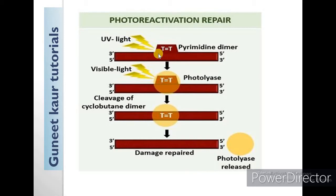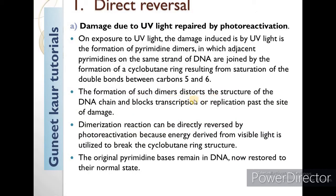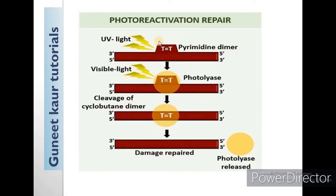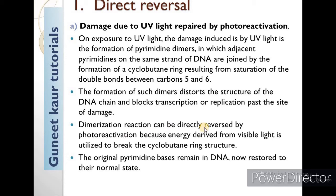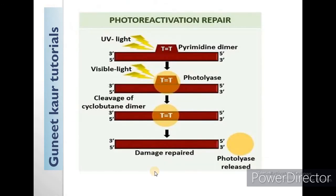In the presence of visible light, the photolyase enzyme removes the cyclobutane ring. The cyclobutane ring will cleave, the original DNA will be restored, and the photolyase will be released. The dimerization reaction can be directly reversed by photoreactivation, because the energy derived from visible light is utilized to break the cyclobutane ring structure. The original pyrimidine bases remain in DNA, now restored to their normal state.